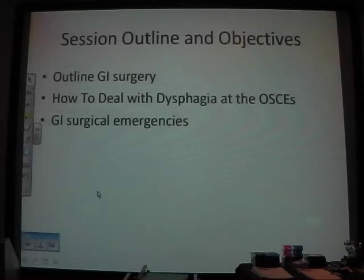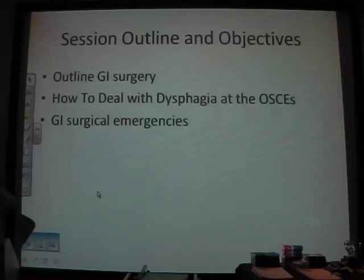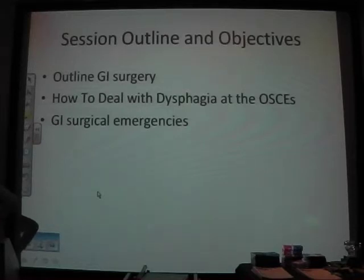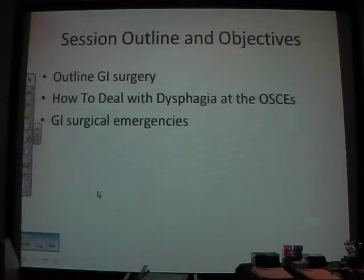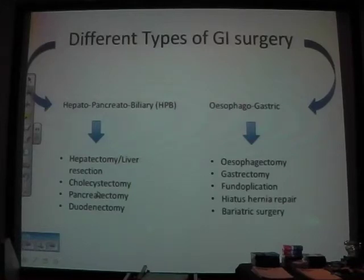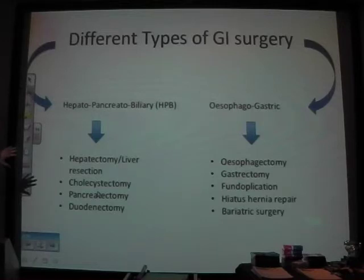So I'm going to talk about dysphagia, go through some case scenarios — some things that you may have touched on before but may be locked away in your distant memory. GI surgery is massive. You can split it into the esophageal or gastric type of things — anything that goes from the gullet to your stomach — and then there's the subsectional stuff: liver, pancreas, gallbladder and so on. Those are the two broad dimensions of it.